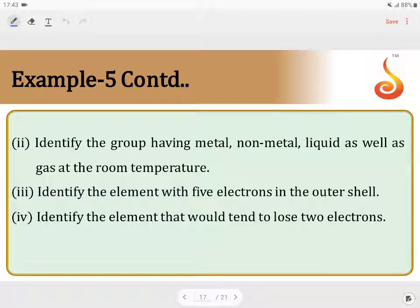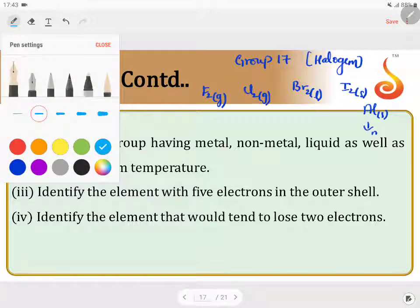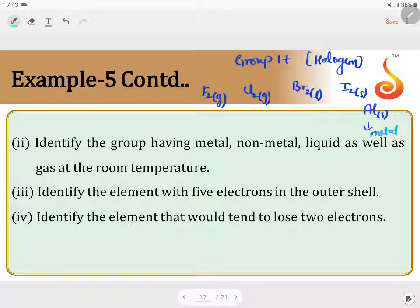Identify the group having metal, non-metal, liquid as well as gas at room temperature. You should have metals, non-metals as well as gas at room temperature. It's nothing but group 17 in the periodic table. That is halogens. Because you have fluorine is a gas. Chlorine gas. Br2 is a liquid. I2 is a solid. And At2 is a solid, which is a metal. And these 4 are non-metals. And you have a gas as well as liquid at room temperature. Therefore, it is halogens. And group is group 17.